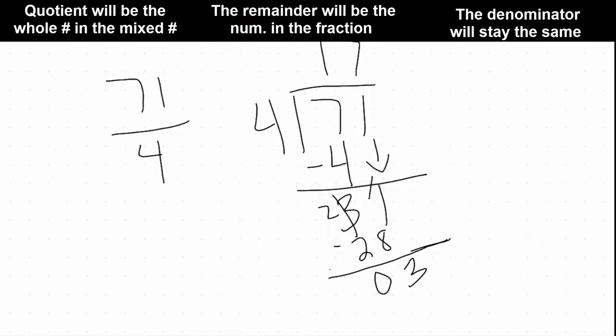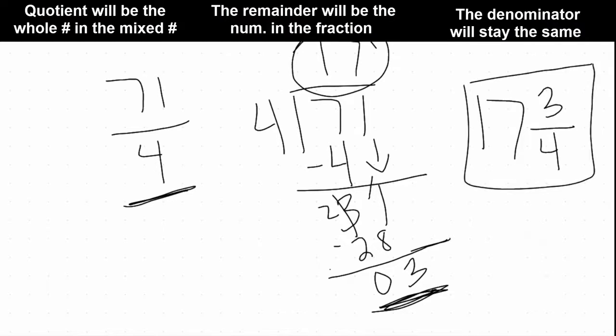The way we piece together our mixed number: our quotient, our whole number quotient up here, that's 17, that's going to be our whole number. Our remainder down here is going to be our new numerator. And our denominator was 4, and it is going to stay 4. Therefore, our new mixed number is 17 and 3/4.